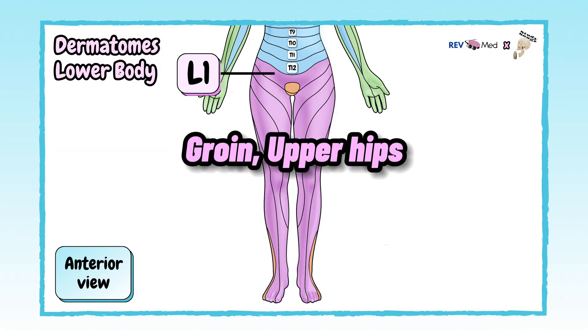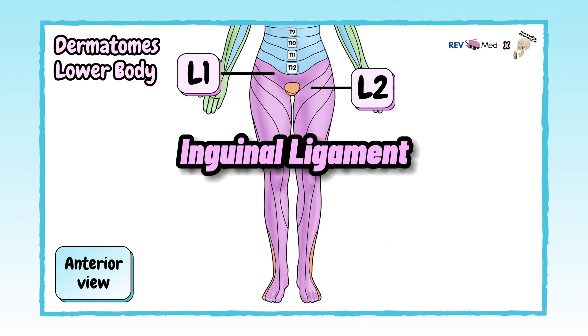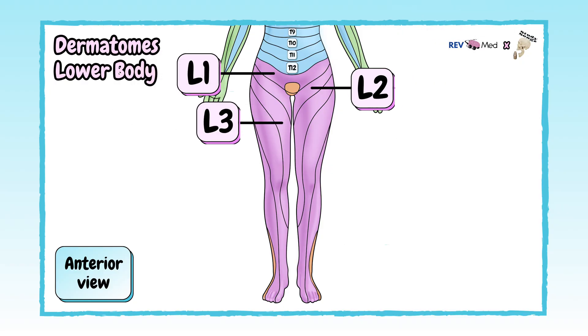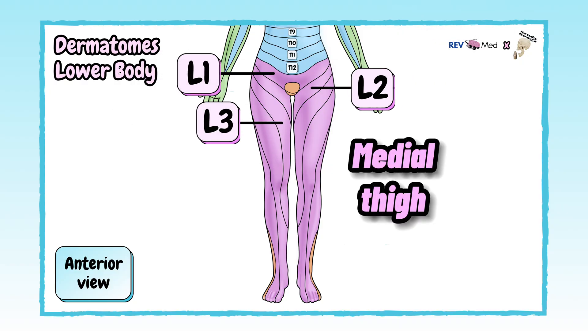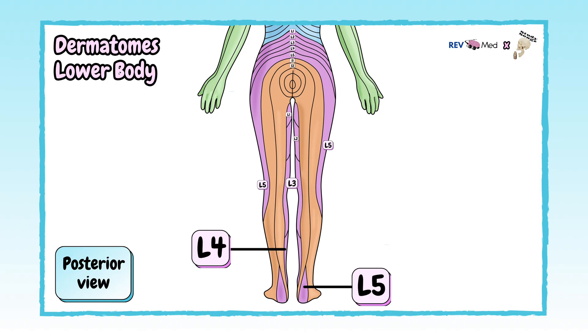L1: upper hips. L2: inguinal ligament. L3: medial thigh. L4: calf, inside.